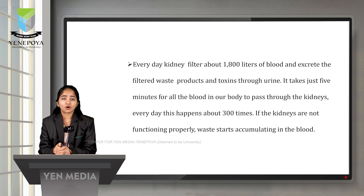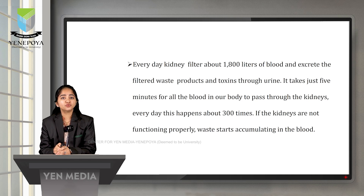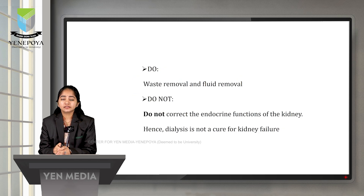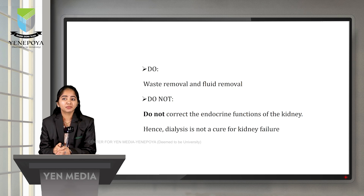Every day, kidneys filter about 1800 liters of blood and excrete the filtered waste products and toxins through urine. It takes just five minutes for all the blood in our body to pass through the kidneys, and every day this happens about 300 times. If the kidneys are not functioning properly, waste will start accumulating in the blood, leading to various abnormalities. Dialysis removes waste and fluid from the patient's blood but does not correct the endocrine functions of the kidney.